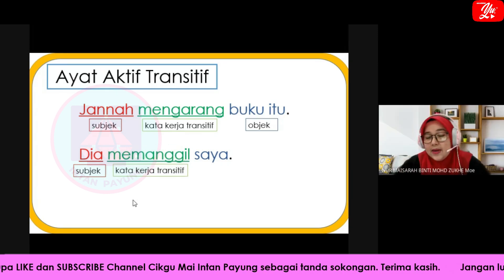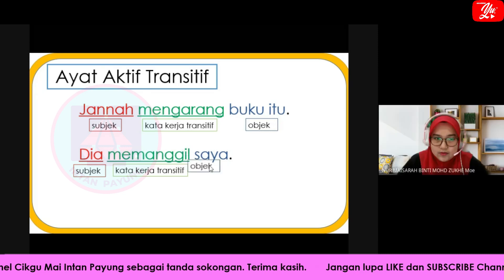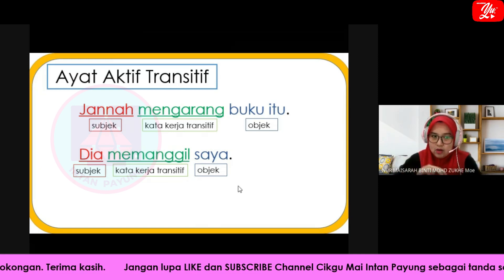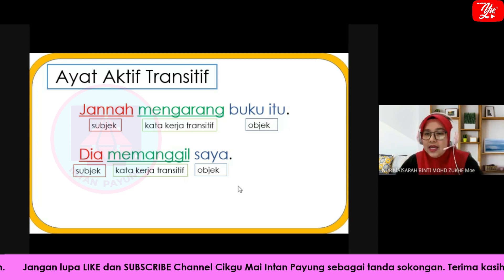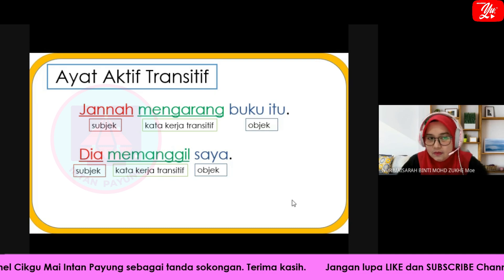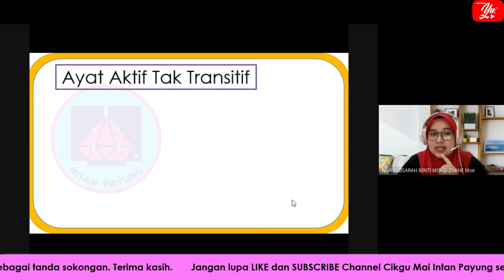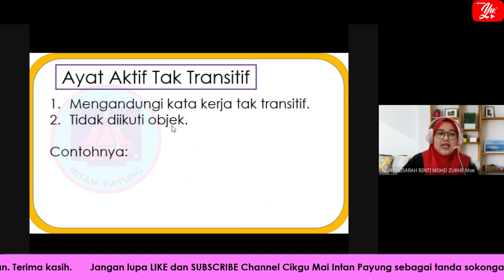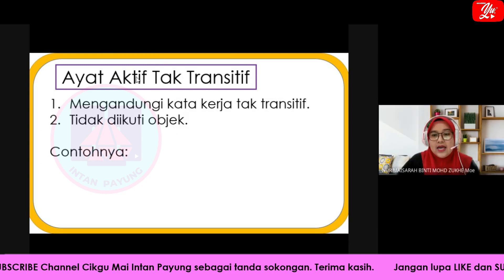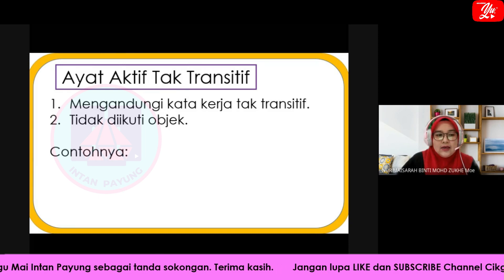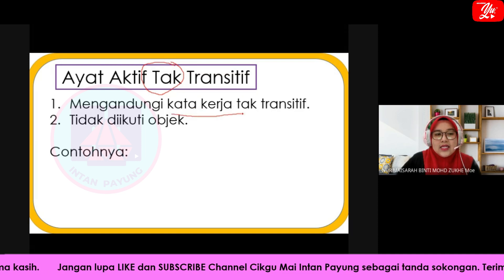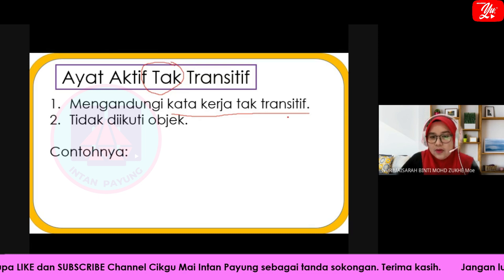Contoh: 'Dia menulis surat' — 'dia' sebagai subjek, 'menulis' kata kerja transitif, 'surat' ialah objek. Kalau 'dia' duduk di belakang pula, contohnya 'Saya memanggil dia', maka 'saya' ialah subjek dan 'dia' pula ialah objek. Sekarang cikgu nak masuk ke ayat aktif tak transitif. Kalau ayat aktif transitif tadi diikuti oleh kata kerja transitif, ayat aktif tak transitif pula diikuti oleh kata kerja tak transitif.